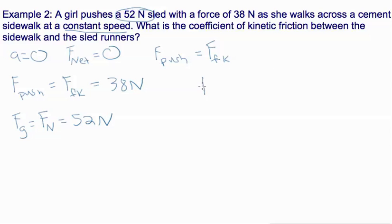And this equation is the exact same as the one we just used for static friction but with the s's replaced with k's. So 38 equals the coefficient times 52 newtons. So our coefficient is equal to 38 divided by 52. And we're going to round that to two significant figures. So we get 0.73.